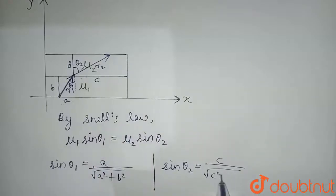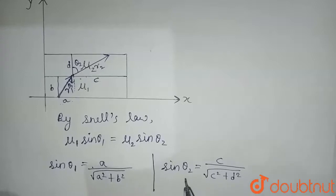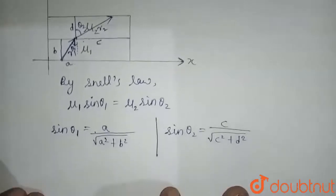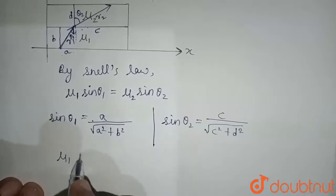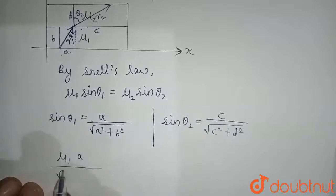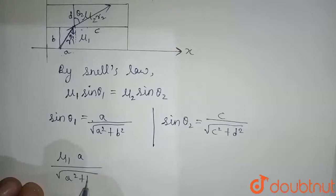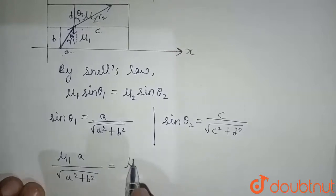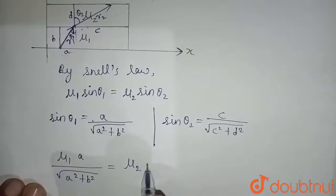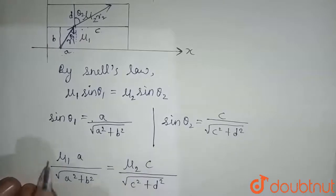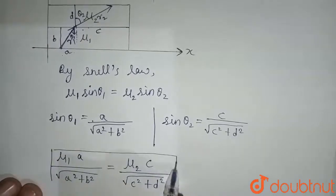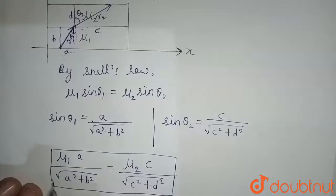Now we'll put these values in Snell's law, so we'll get μ₁a/√(a² + b²) = μ₂c/√(c² + d²). So this is our answer. Thank you.